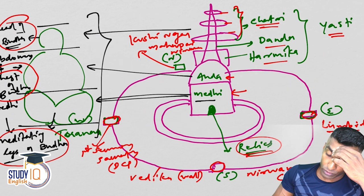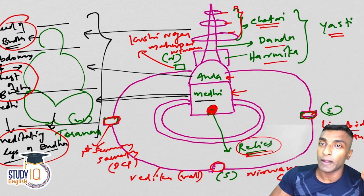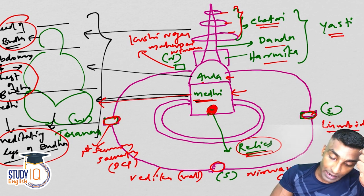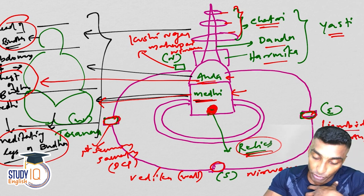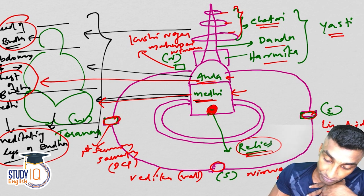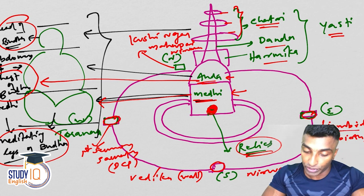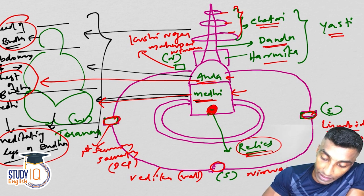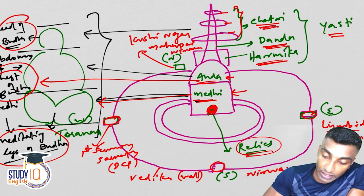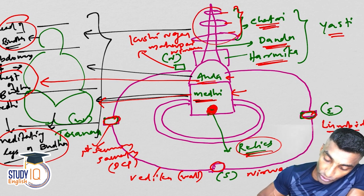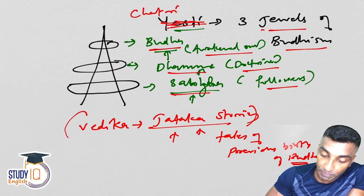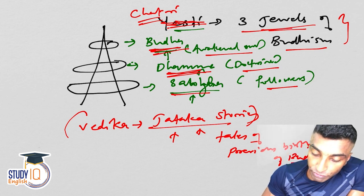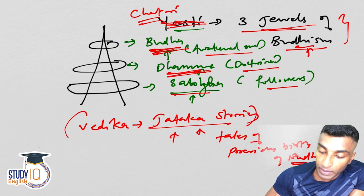We have also discussed the relics. Medhi represents the meditating legs of Buddha. Andha represents the chest and abdomen of Buddha. Yasti is the head of Buddha. In Yasti, you can see Danda, Hermika and Chatri. The Chatri — these three — can be seen as the three jewels of Buddhism. Chatri is actually the three Ratnas of Buddhism: Buddha, Dhamma and Sangha.